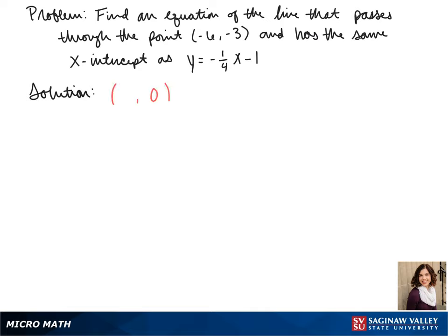First, we'll be finding what our x-intercept is. We know that in an x-intercept, our y-value will be 0. So we plug in 0 for y, and we get 0 = -1/4x - 1. To solve for x, we add 1 to the other side.